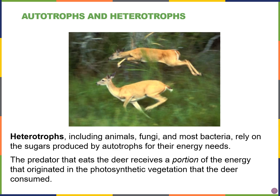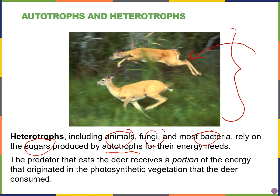Heterotrophs, on the other hand, include organisms like animals and humans, fungi, and bacteria. These organisms get their carbon source from autotrophs. For example, in our book, the predator who is going to be eating deer will get their energy ultimately from the vegetation, the plants that the deer consumed, which eventually ends up within the predator.